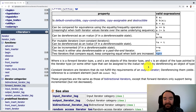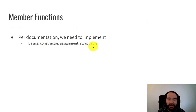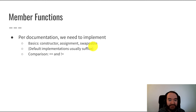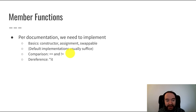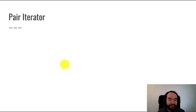So those are the operations we need to implement. To recap: we need to implement some basic stuff that applies to pretty much every class — the constructor, assignment, and swap. Often the default implementations suffice and we don't need to write explicit code. What does take creative thought are the comparison operators, the dereference operator, and the increment operator. The dereference operator needs to know about how we find elements within a data structure, and the increment operator needs to move us from one location to the next, including going from a valid location to past the end.